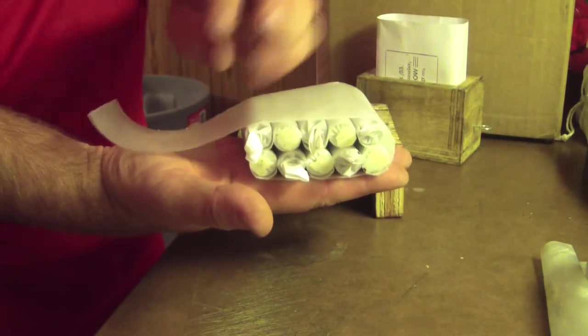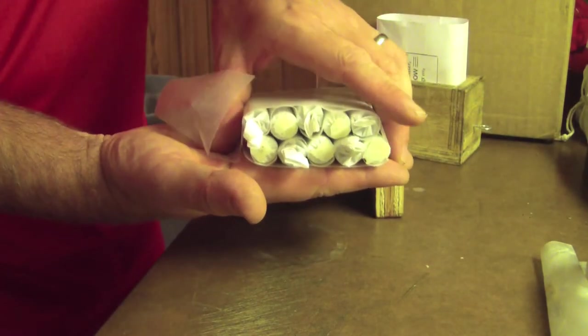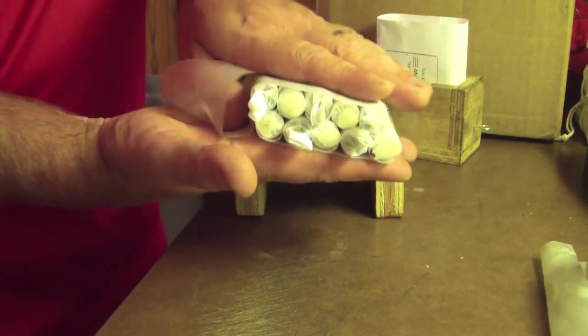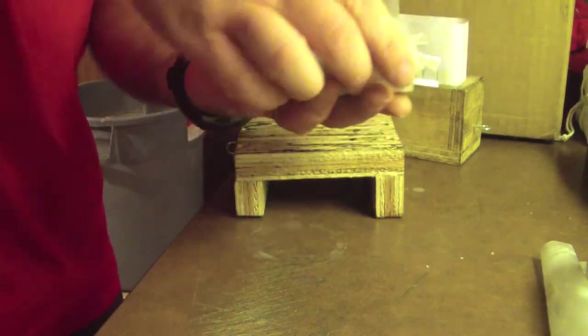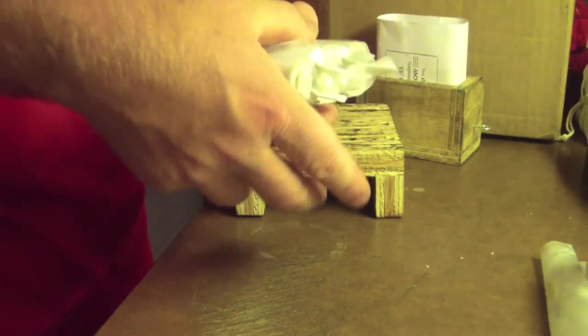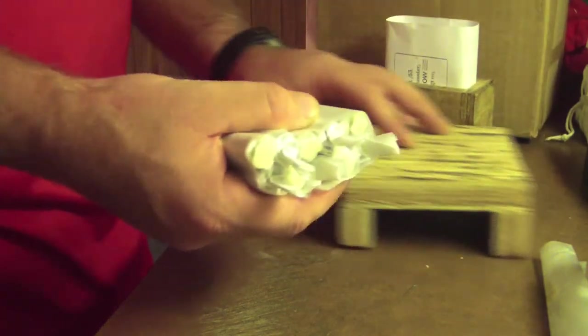Once the bundle is out, we wrap the remaining tail of the waxed strip around the bundle. Now this process here looks a little bit awkward, but I can assure you with practice, it becomes smooth and effortless.